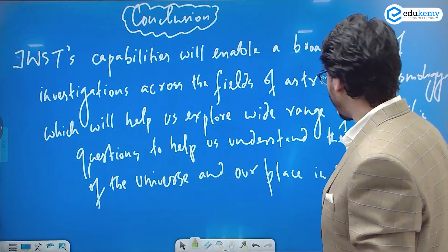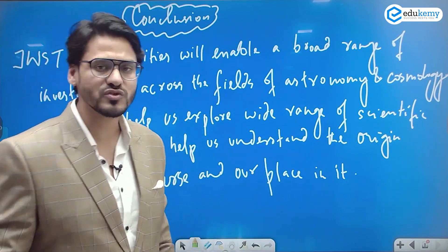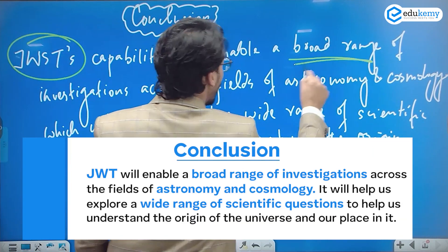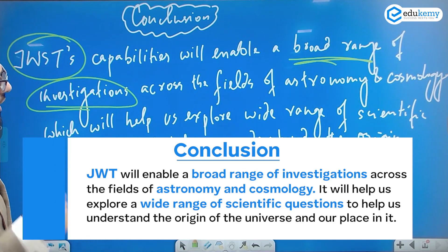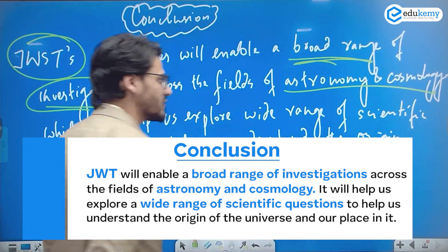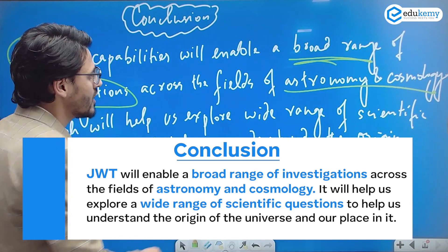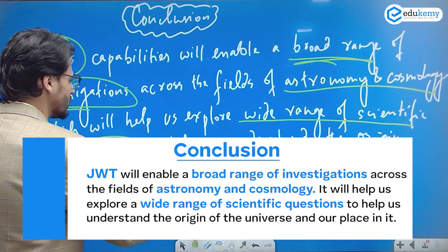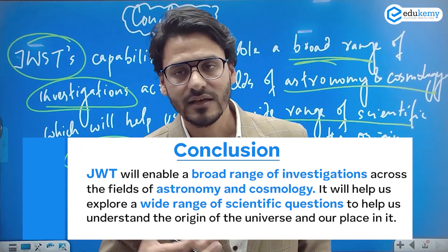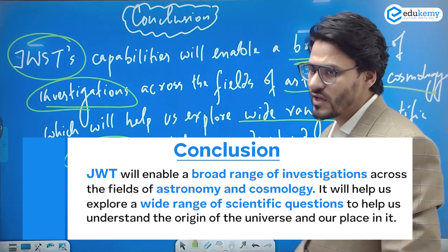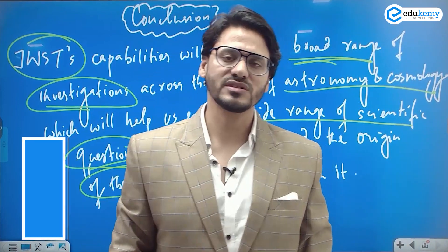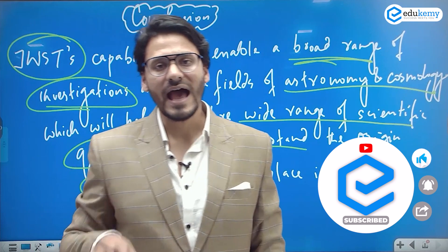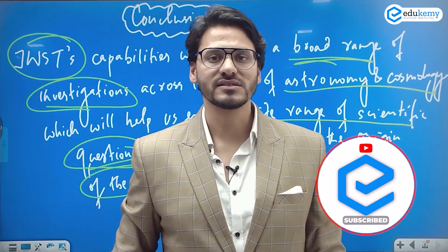For the conclusion, we can suitably state: the James Webb Space Telescope's capability will enable a broad range of investigations across astronomy and cosmology, helping us explore wide-ranging scientific questions to understand the origin of the universe and our place in it. This was a fairly straightforward, Level 1 question — anyone who followed current affairs would know the key goals, potential benefits, and unique features of the world's strongest telescope.